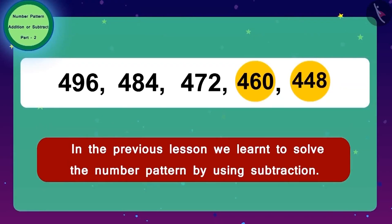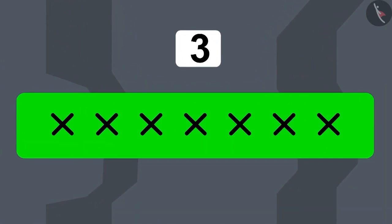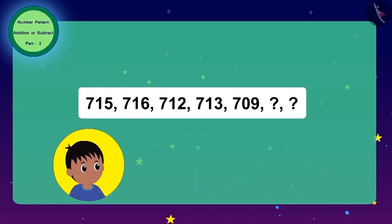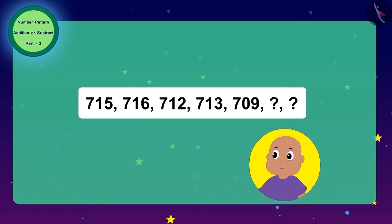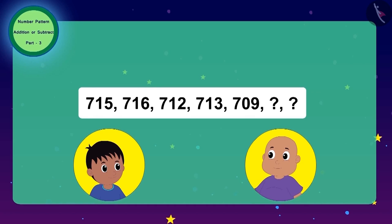In the previous lesson we learned to solve number patterns using subtraction. Let's see what Jeev's last code is. Raju looked at the first two numbers and felt that 1 is added to get the next number. But Bablu looked at the second and third numbers and felt that 4 is subtracted. Whose answer is correct — Raju's or Bablu's? Actually, both are correct. In this code, both addition and subtraction are used.